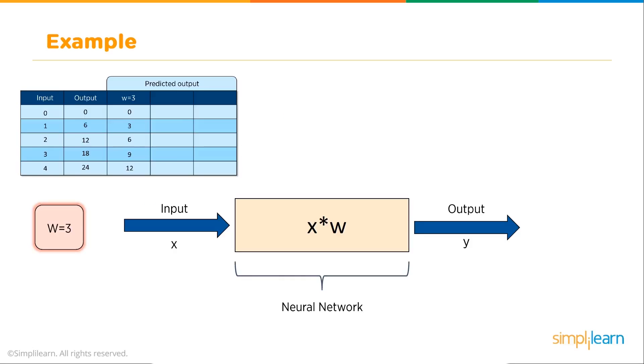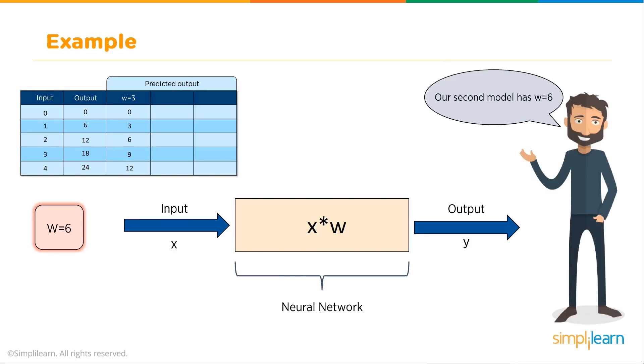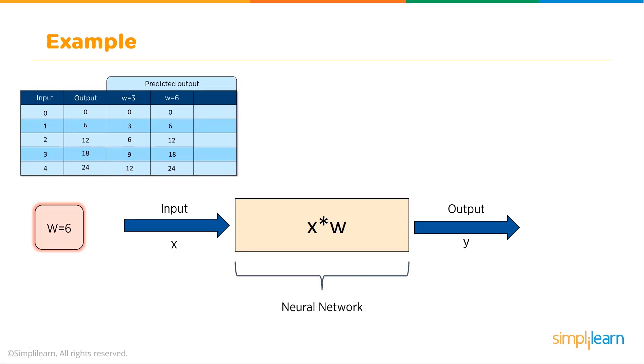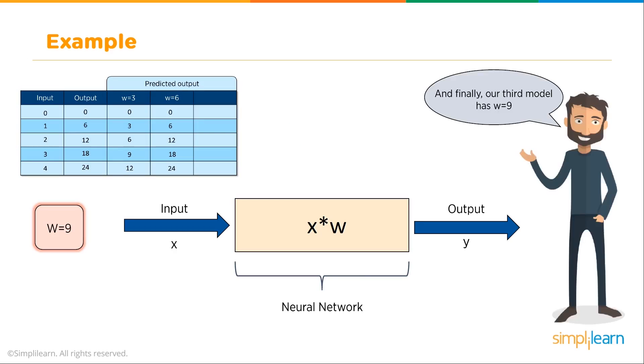We have our w equals 3, and we come up with a second model where the w equals 6. Now we're going to look at how we figure out w equals 6 in just a minute. That is part of the math behind this. We put in w equals 6 and build the w equals 6 chart. We end up with 0, 6, 12, 18, 24, which is the output we're looking for. And in that manner we end up with the correct answer.